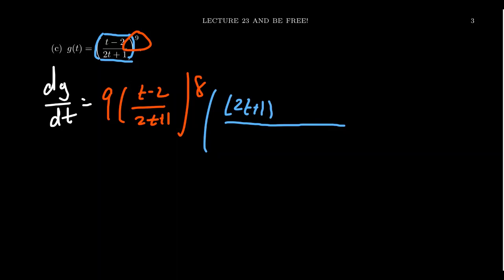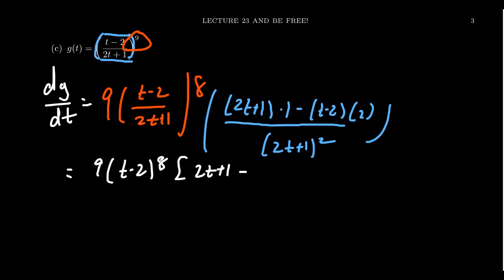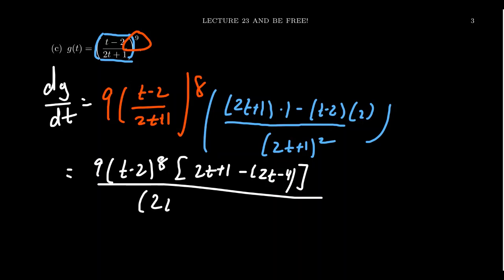Remember our quotient rule poem: low d high minus high d low, square the bottom. Low is the denominator 2t plus 1, times the derivative of the top — the derivative of (t minus 2) with respect to t is 1. Minus high, which is the top function (t minus 2), times the derivative of the denominator, which is 2. Combining and cleaning up: we have the coefficient 9, then (t minus 2) to the 8th power. In the numerator we get (2t plus 1) minus 2t minus 4 — I distributed the 2. In the denominator we have (2t plus 1) to the 8th from the chain rule, combined with the (2t plus 1) squared from the quotient rule, giving (2t plus 1) to the 10th power.